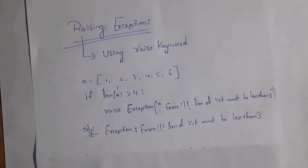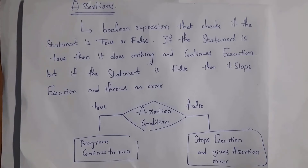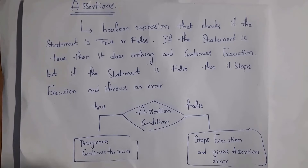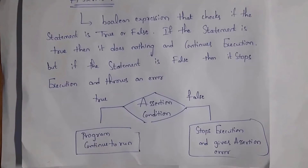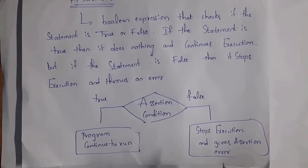Next I will explain assertions. An assertion is a boolean expression that checks if a statement is true or false. If the statement is true, it does nothing and continues execution. If the statement is false, it stops execution and displays an error. In the flowchart: if the assertion condition is true, the program continues; if false, it gives an AssertionError.